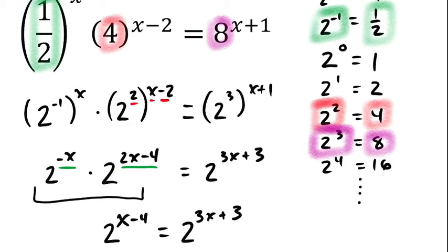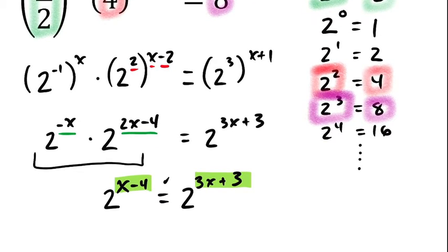All right. So, now if I look at it, I have an equation where my bases are both two. And I know that the only way that these are actually going to be equal to each other is if this exponent is equal to this exponent. So, I'm just going to solve by setting these exponents equal. So, x minus four must be the same as three x plus three.